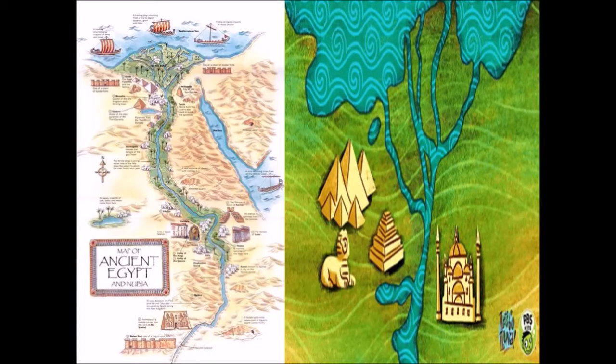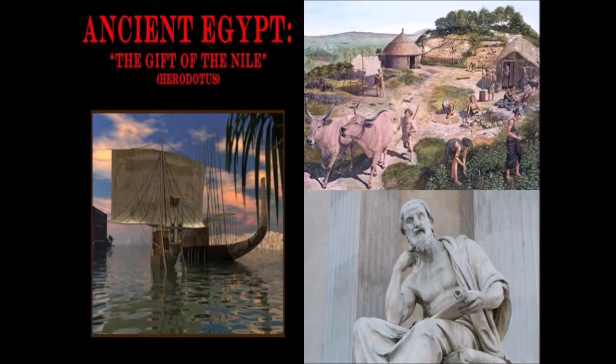Location. Egypt lies in the north-eastern corner of Africa. It is bounded by the Red Sea on the east and the Mediterranean Sea in the north. Egypt is irrigated by the River Nile, which starts in Lake Victoria and flows into the Mediterranean Sea. The dry regions on both sides of the Nile remain as desert.